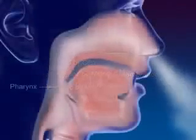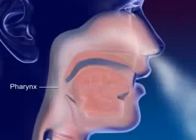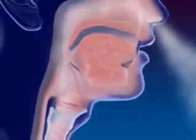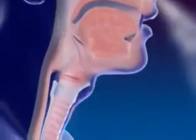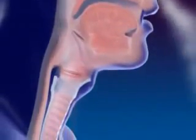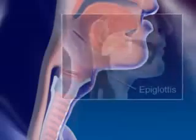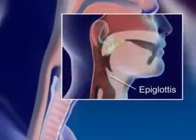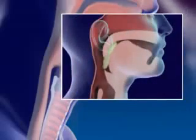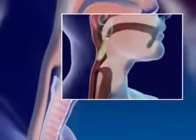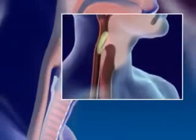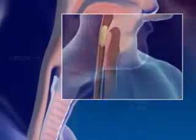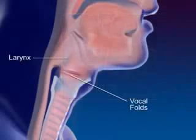Air moves into the pharynx, or throat, the common passageway for food and air. Air continues on to the larynx. The epiglottis, a flap of tissue in front of the larynx, closes off the larynx when swallowing to prevent food from entering. The larynx, or voice box, contains the vocal folds.